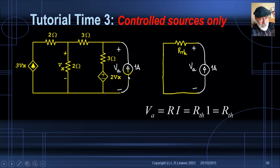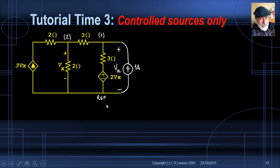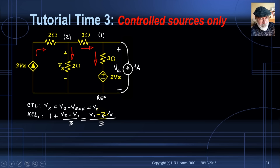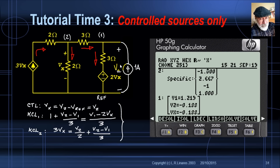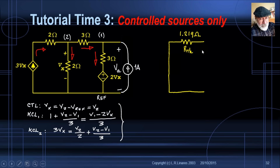With 1 amp applied at the port: choose a reference, identify nodes 1 and 2, write branch currents, the CVL equation, and two KCL equations. Solving gives V1 = VA = 1.219 volts. Since VA = R_TH, we get R_TH = 1.219 ohms. That is the Thevenin equivalent of the circuit at port AB: V_TH = 0 V, R_TH = 1.219 ohms.